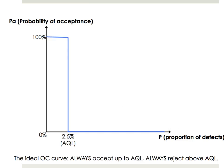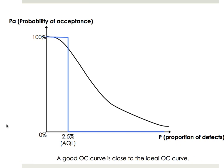Now, in an ideal world it wouldn't be a curve — it would look like a step function. Because you would set your AQL and say: I want to accept everything that's below 2.5% — I want 100% chance of acceptance. But then if it's above 2.5% of defects, I want to reject — 0% of acceptance. But of course, if we do inspections based on random sampling, we're not going to be able to replicate that. So we want a curve that kind of gets close to it.